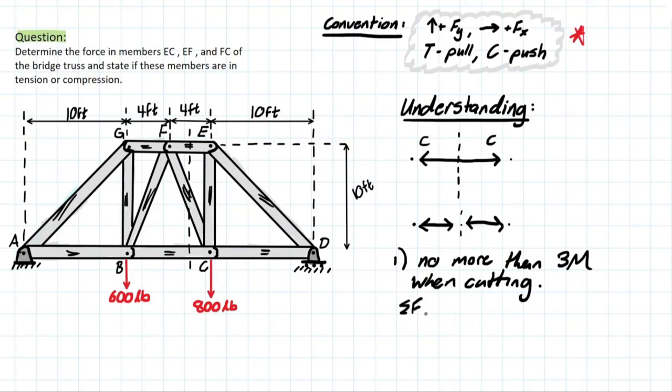So, we have summation of forces at x is equal to zero, summation of forces at y equals zero, and the summation of moment is equal to zero. So, three equations. That means if we had three unknowns, we would have to cut three members. Two unknowns would be two members.